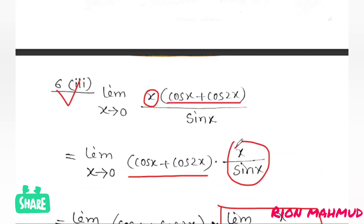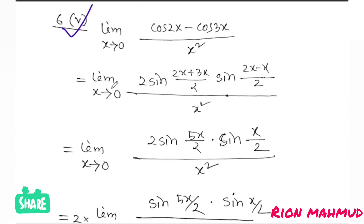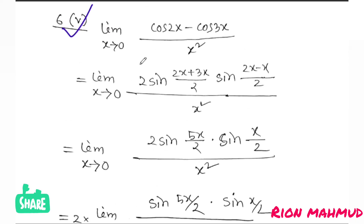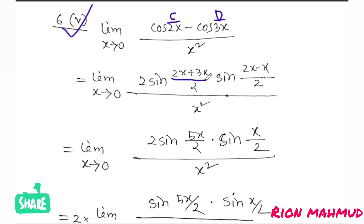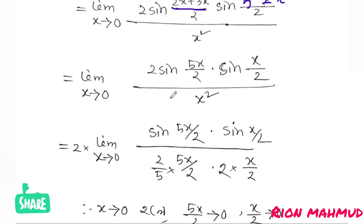Fifth question: limit x tends to 0 of (cos2x minus cos3x) divided by x squared. Using cos C minus cos D: C is 2x, D is 3x. So 2 sin((2x+3x)/2) sin((3x-2x)/2). That gives 2 sin(5x/2) sin(x/2). Dividing by x squared: 2 sin(5x/2)/x times sin(x/2)/x, which equals 2 times 5/2 times 1/2.